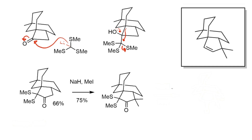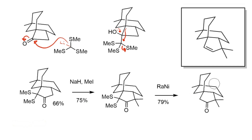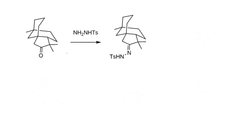Once the methyl groups are installed, another advantage of thioketals is that they can be deprotected under different conditions from normal ketals — in particular, they can be reduced completely to the methylene group. Using Raney nickel, the sulfurs are removed and replaced with hydrogens. This gives us essentially everything we need for the clovene scaffold, with the final step being conversion of the remaining carbonyl to a double bond.